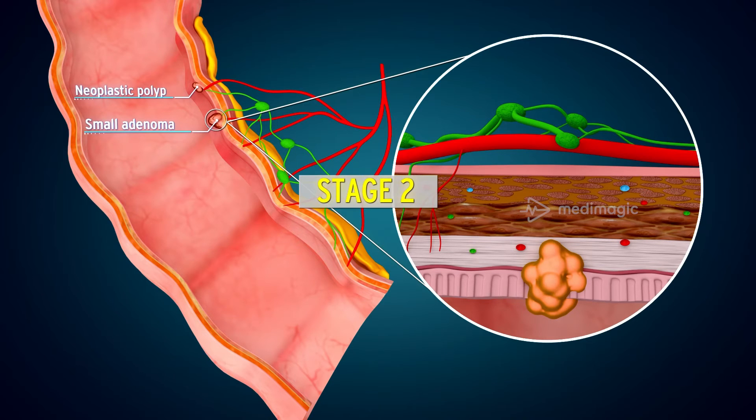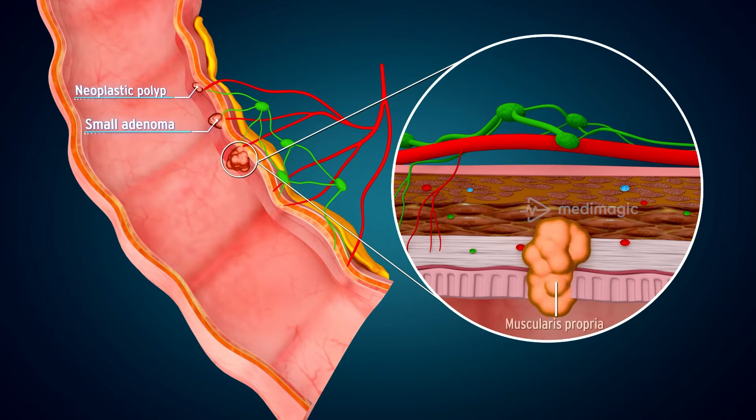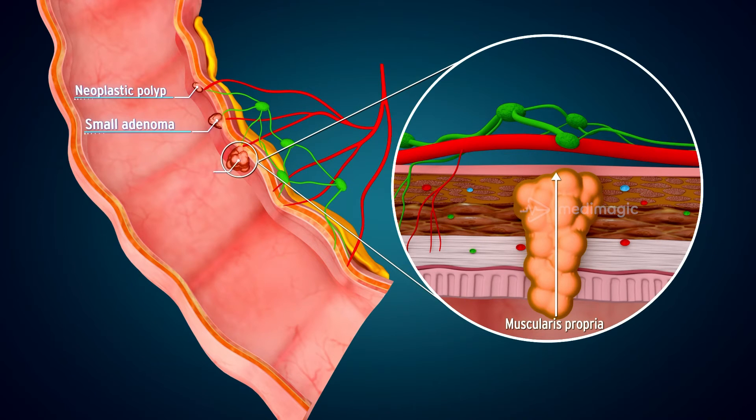Stage 2: Now the tumor invades the muscularis propria and grows into a large adenomatous lump.